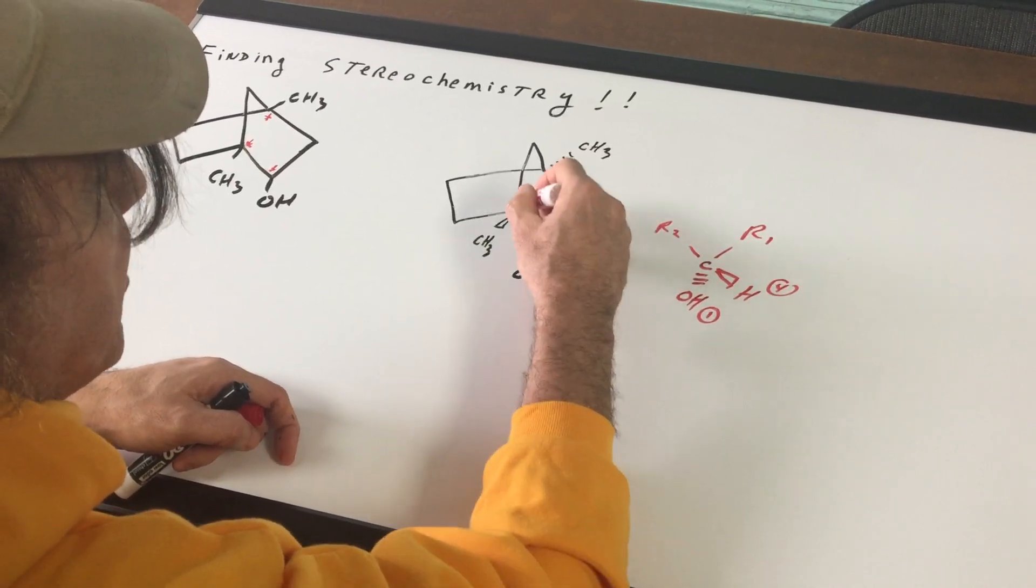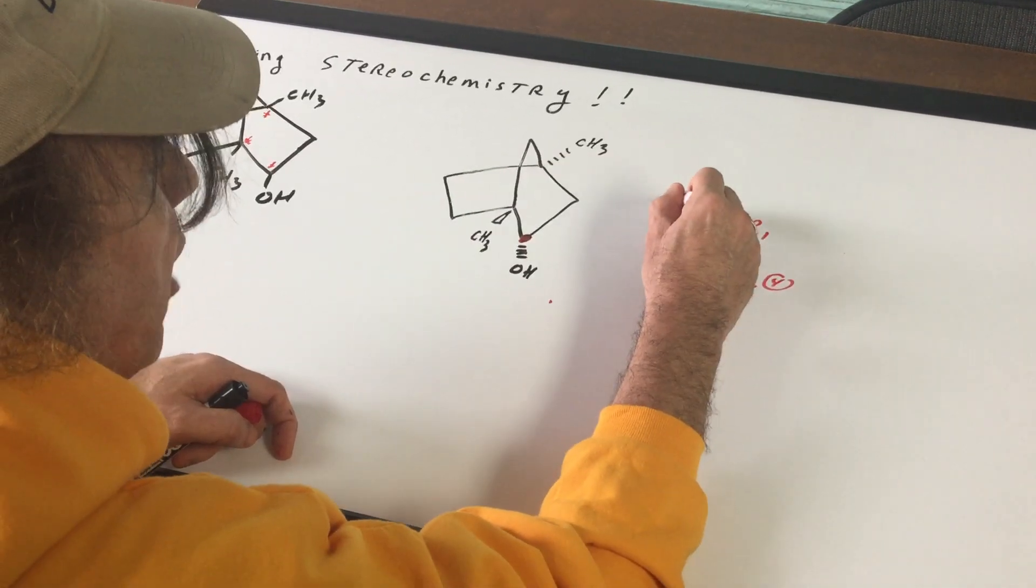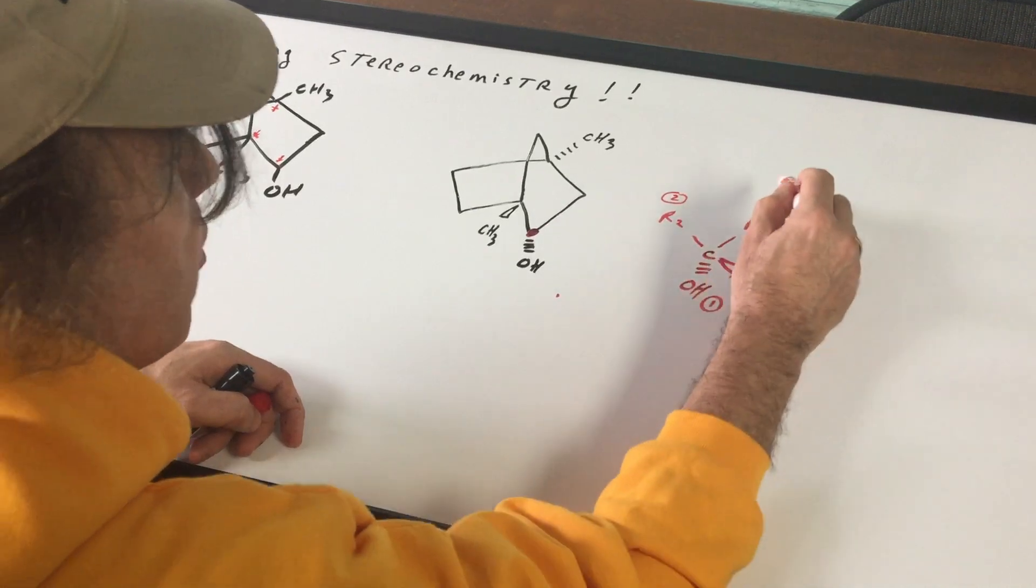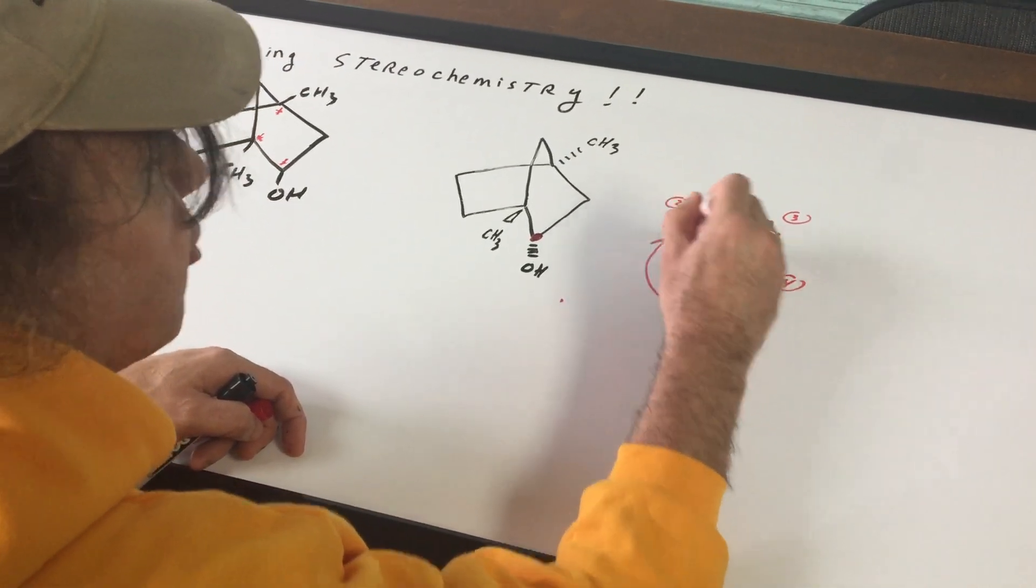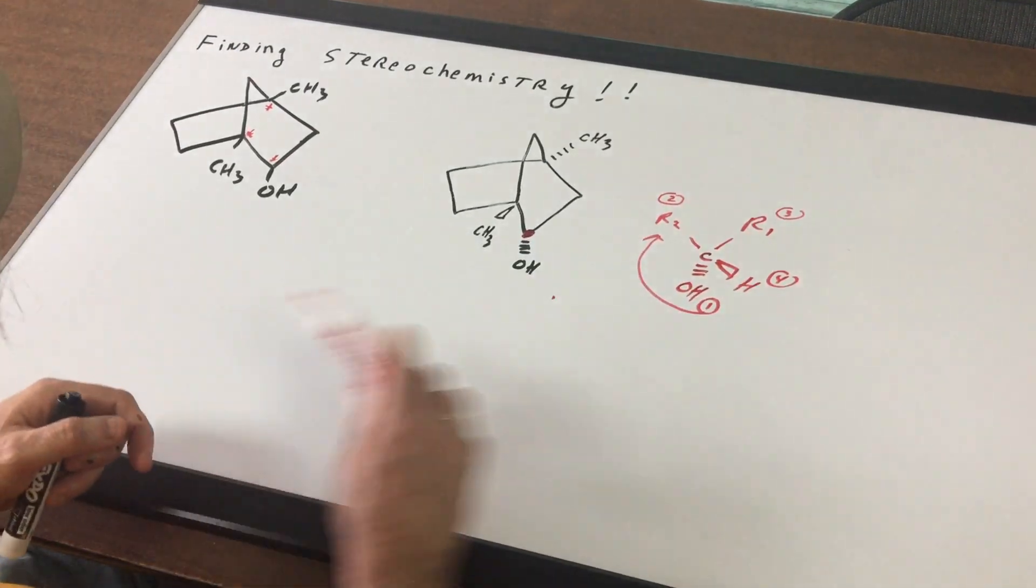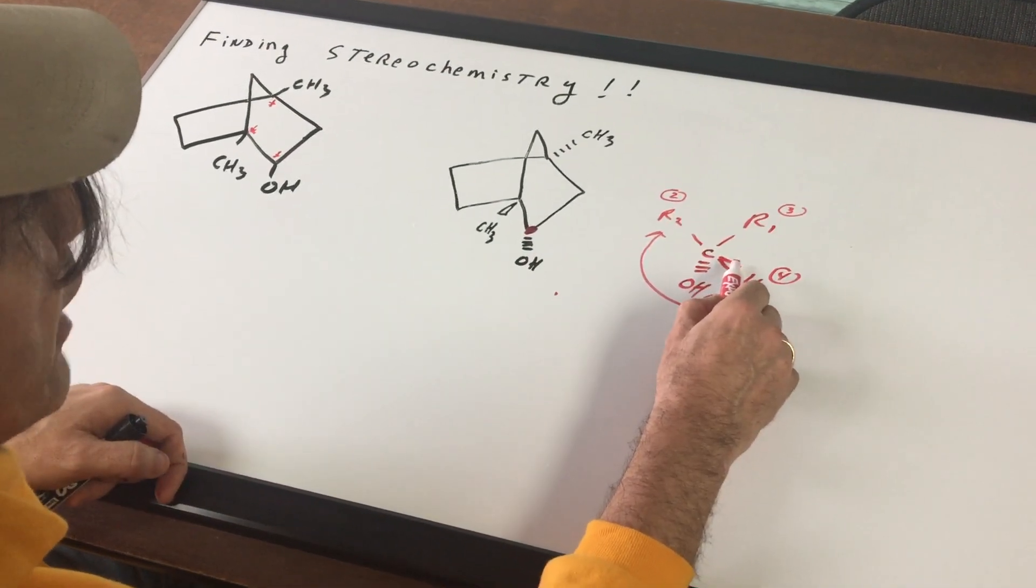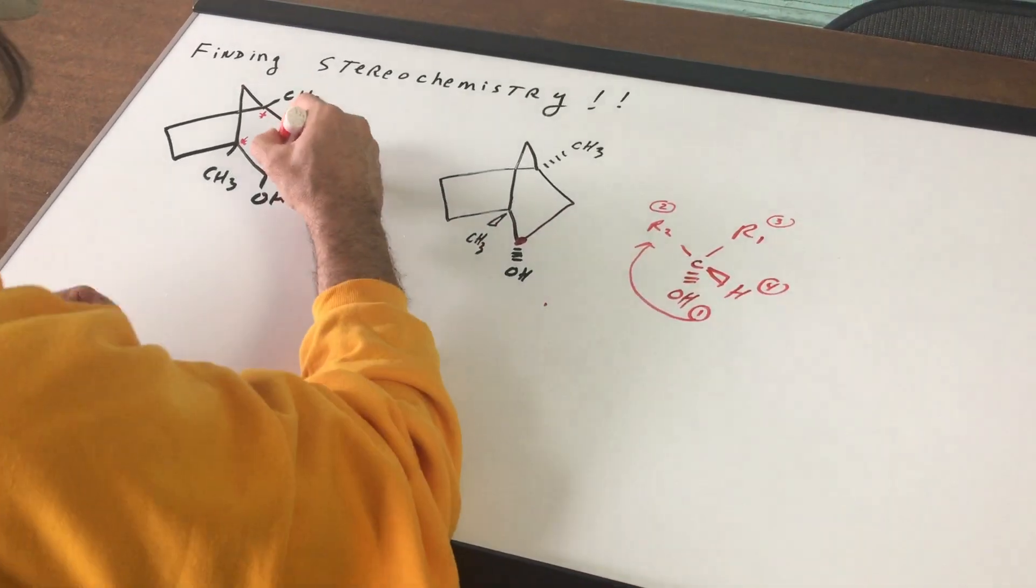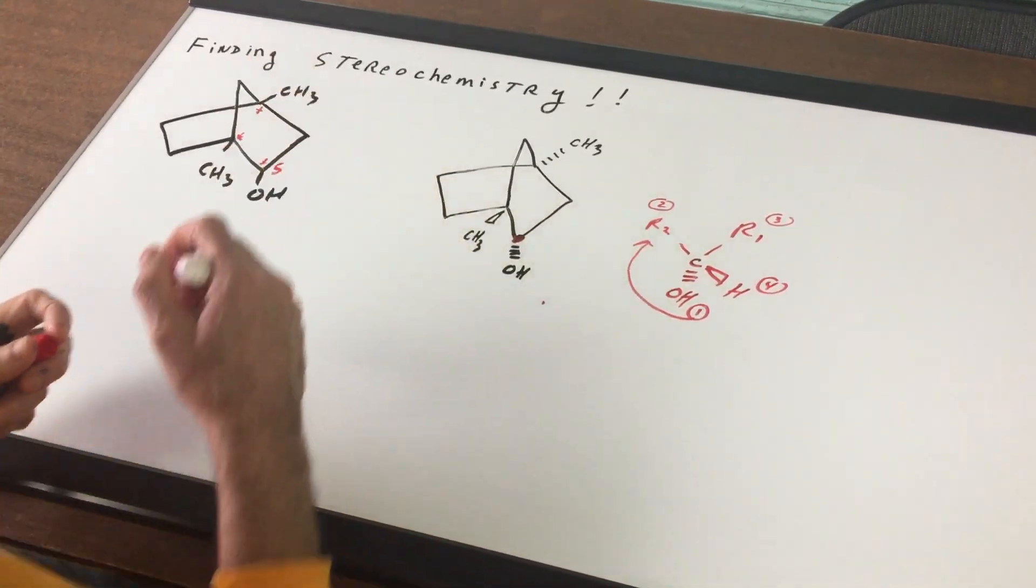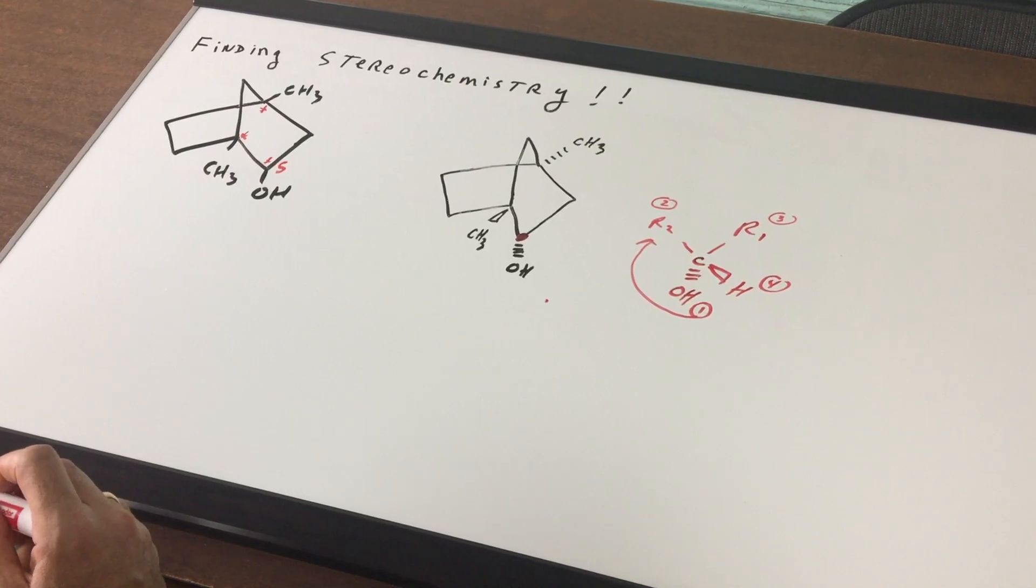Now, which path is worth more? This is a CH2, but this is a C to a branch. So that is number 2, hence this is 3. You connect 1 to 2. It looks like an R, but because there's a wedge on 4, that means it would be an S. So we've got the configuration as an S on that carbon right there.